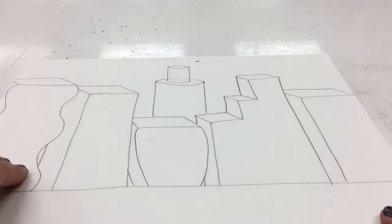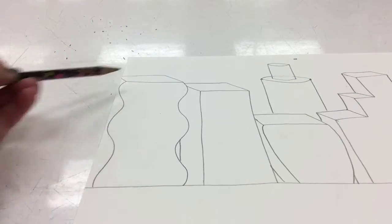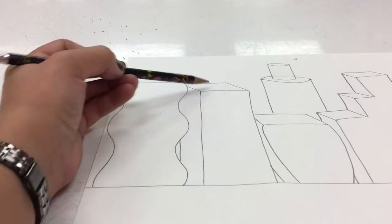So now I've got the buildings laid out for my cityscape and notice that they're all three-dimensional forms. We see the front, the top, and the side. Front, top, side.